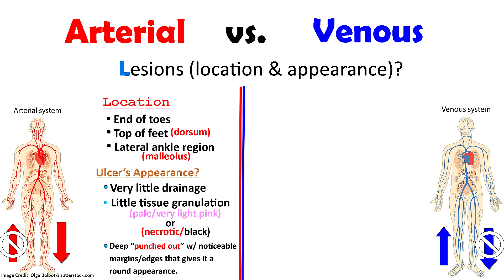Arterial ulcers tend to be located on the ends of the toes, the top of the feet (the dorsum of the feet), and the lateral malleolus region — the outside part of the ankle. These ulcers tend to have very little drainage and very little tissue granulation, where you have healing of new tissue, and that's because there's compromised blood flow going to that ulcer and extremity, so it can't really drain and it can't really heal.